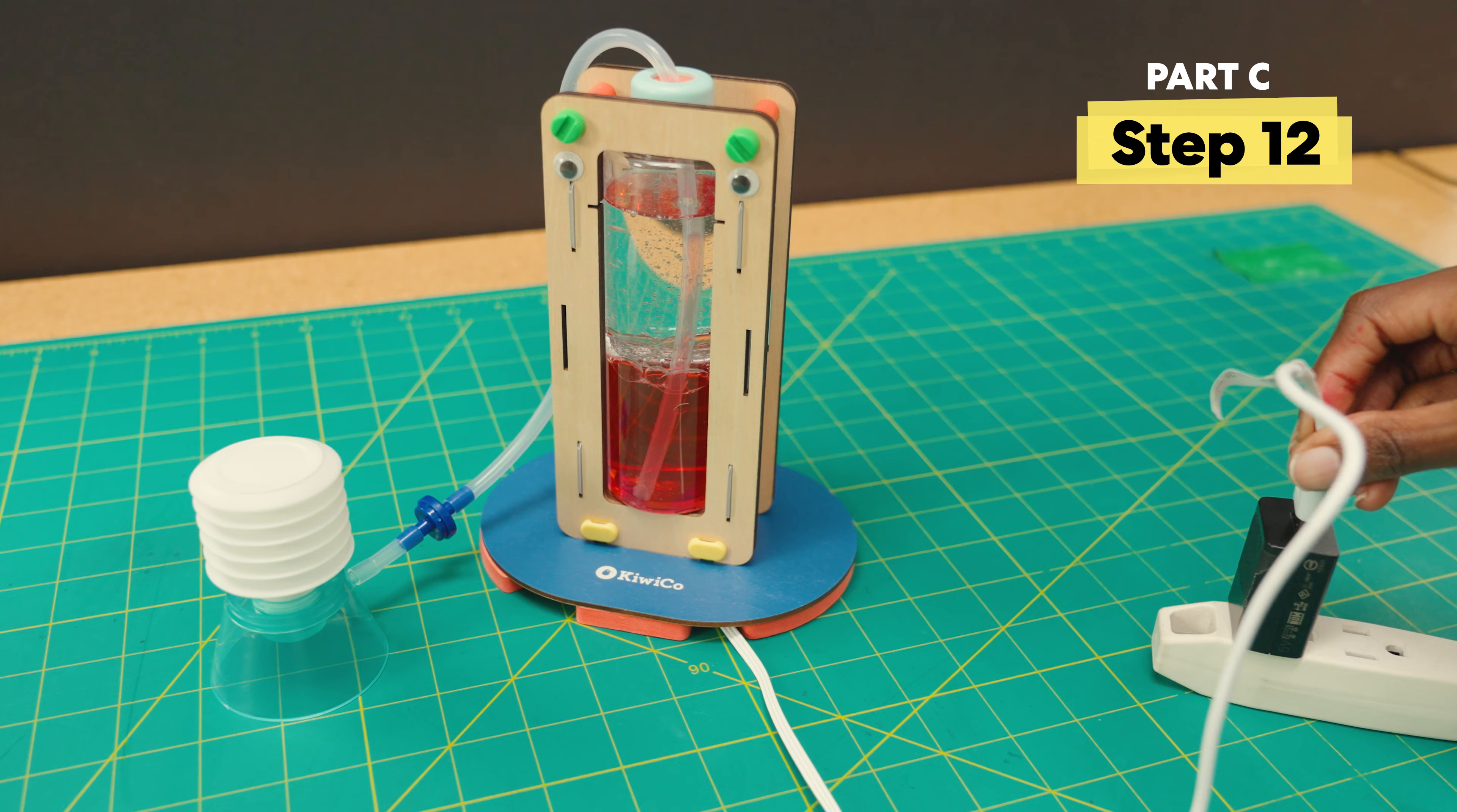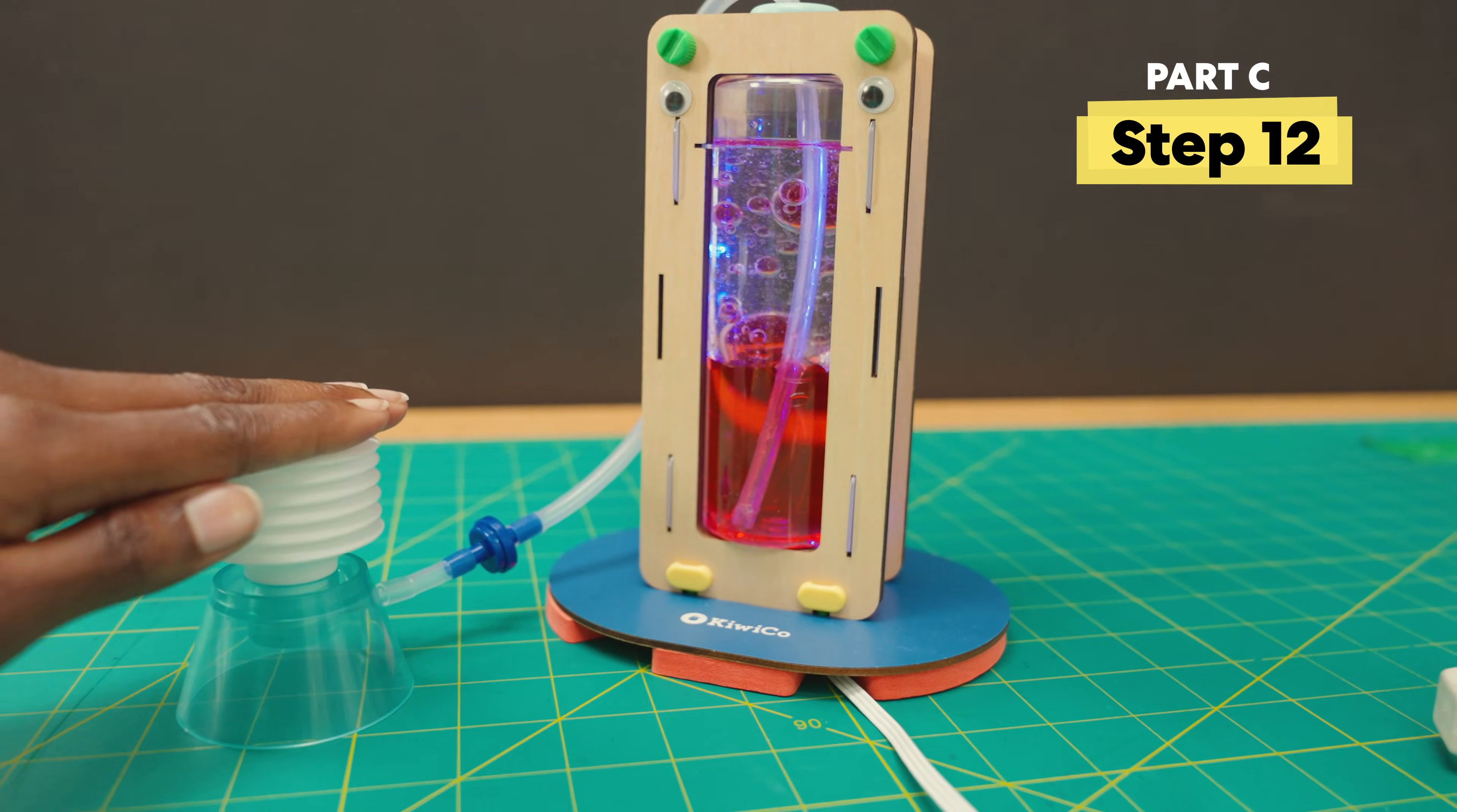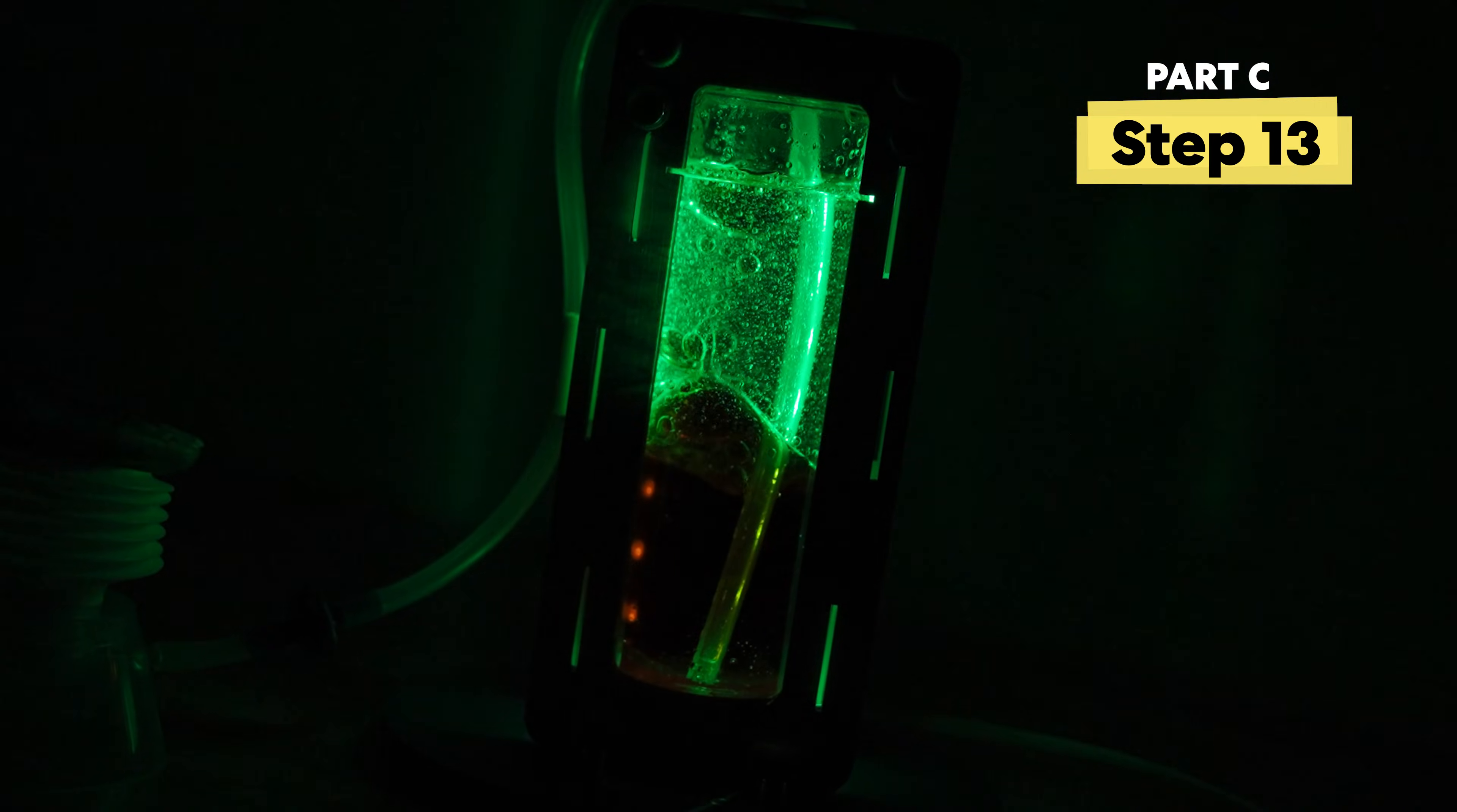For extra fun, plug the light into a power source. Now, turn off the lights and press the pump for a glowing show. You've built a bubble lamp.